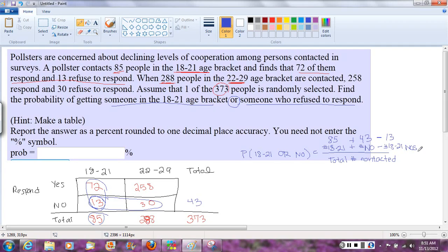So for a numerator, I've got 85 plus 43, minus 13. Let's do that out. Giving me 115 for my numerator. Divided by my denominator, the total number contacted, 373. That's hard to show up. So it's 115 over 373.